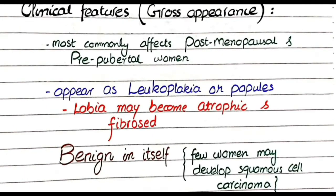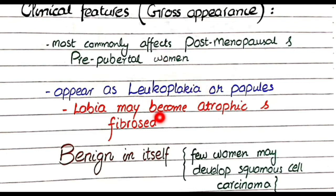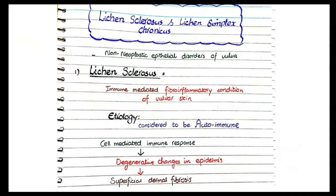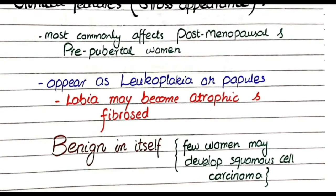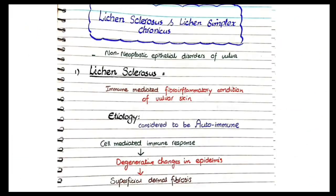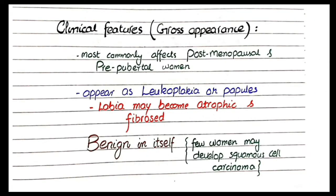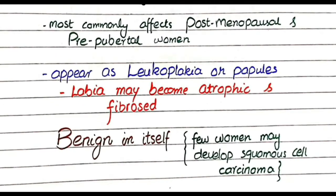Lichen sclerosis most commonly affects postmenopausal and prepubertal women — it does not usually affect women of reproductive age. The gross appearance shows leukoplakia, which are white-colored patches or plaques. The labia majora and labia minora may become atrophic due to degenerative changes, and chronic inflammation can lead to fibrosis of the labia, causing narrowing of the vaginal orifice.